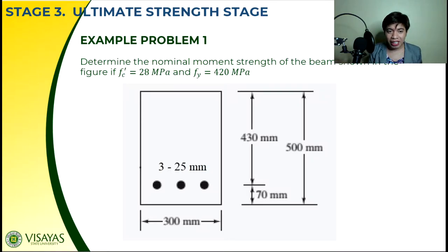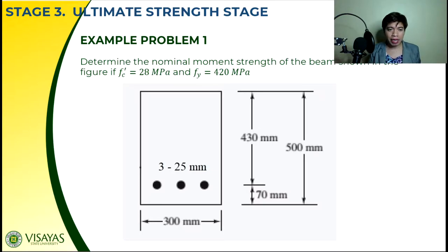So yung ating effective depth dito guys is 430. Yung 70 is the concrete cover, 300 yung ating width. Yung 300 is yung B, yung 430 is yung D. Tapos yun na yung ating mga kailangan, pati na din yung ating 3 na 25mm diameter bars.